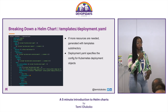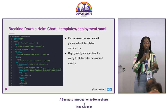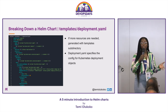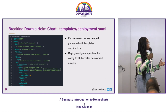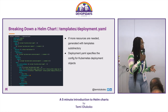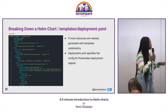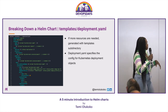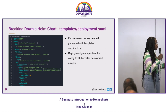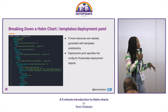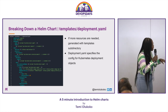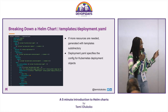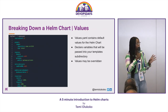Let's take a closer look at the templates subdirectory. This combines your Kubernetes manifests and can use values in your values YAML file. Here we're looking at a deployment YAML that specifies the configuration for Kubernetes deployment objects. This particular YAML makes use of a file called a helpers TPL file, which we can tell because on line 15 we have a line of code prefixed by the word 'include'.